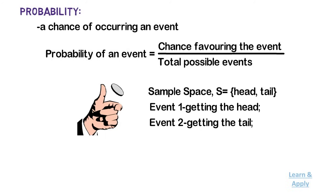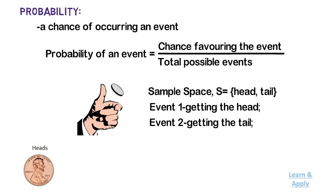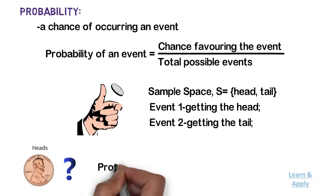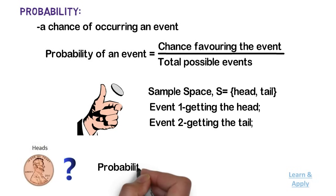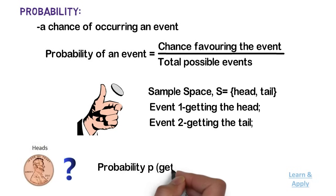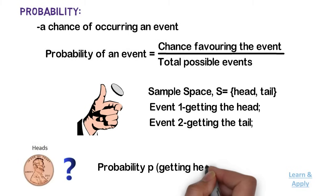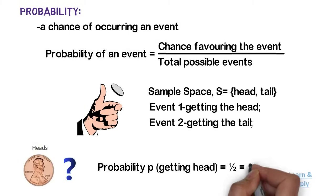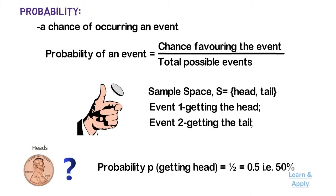For example, in the tossing a coin experiment, what is the probability of getting a head? Here, probability P of getting a head is equal to 1/2, which is equal to 0.5, that is 50%.